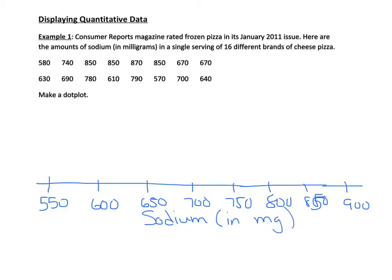From there, you're just going to put dots that represent each of your values. My first one is 580 — 575 is right in between here, so 580 goes just next to that. The next one, 740, goes close to 750. Then I have 850, and I have another one at 850, so I'm going to stack those two right on top of each other. Then I have an 870, which goes just to the left of the halfway point between 850 and 900. And I actually have another 850. You're just going to keep putting things in this way throughout the whole thing.